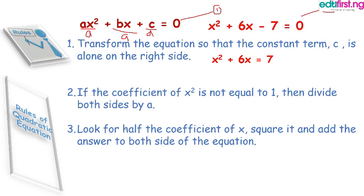Rule three says look for half the coefficient of x, square it, and add the answer to both sides of the equation. That is, what is the coefficient of x, not x²? x is 6. He said look for half of it, which is what? 6 divided by 2 is 3.